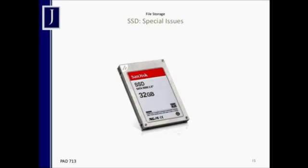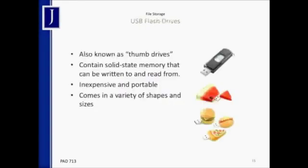We all know about USB flash drives — they're extremely common, originally known as thumb drives. They contain solid-state, non-volatile memory that can be written and read. When you unplug them from the computer, you don't lose the memory. They're inexpensive — you can buy a 4-gigabyte flash drive for $10 or less — so the cost of storage is coming down significantly. As you can see from the pictures, they come in a variety of shapes and sizes, disguised as a hamburger, a watermelon, a Darth Vader, or an R2-D2. It is the digital forensic expert's responsibility to identify all these different objects and understand the value they might contain.